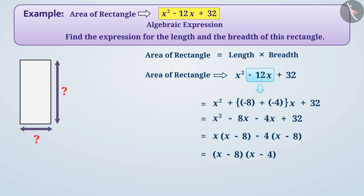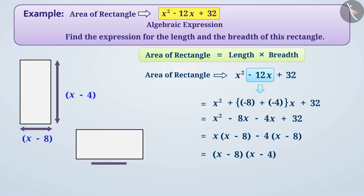We know that the area of a rectangle equals length multiplied by breadth. Therefore, the length of the rectangle is (x - 8) and the breadth is (x - 4), or alternatively the length is (x - 4) and the breadth is (x - 8).